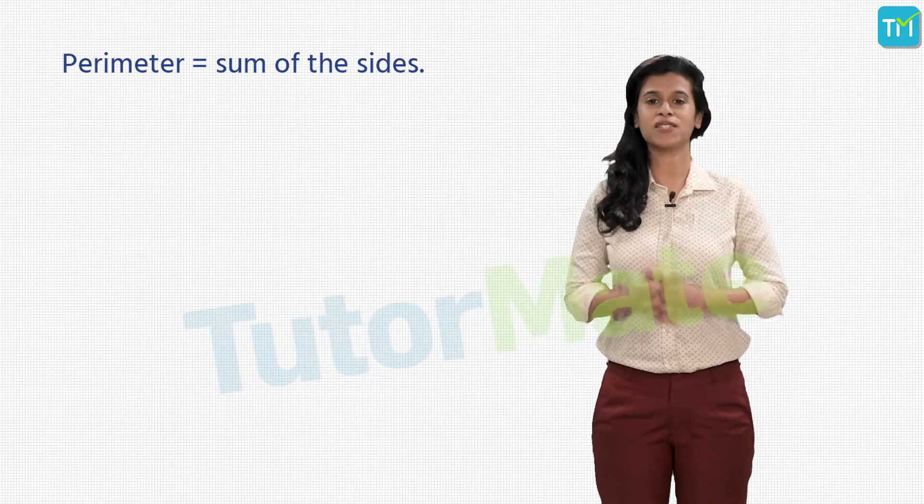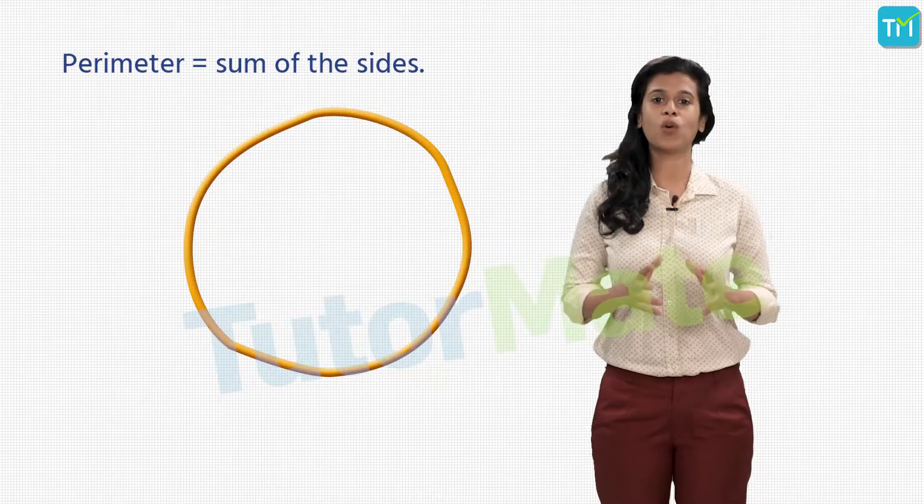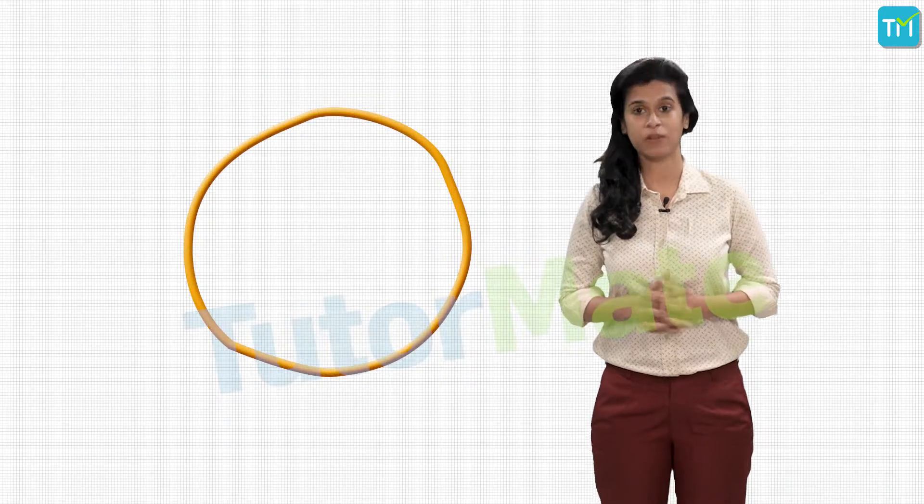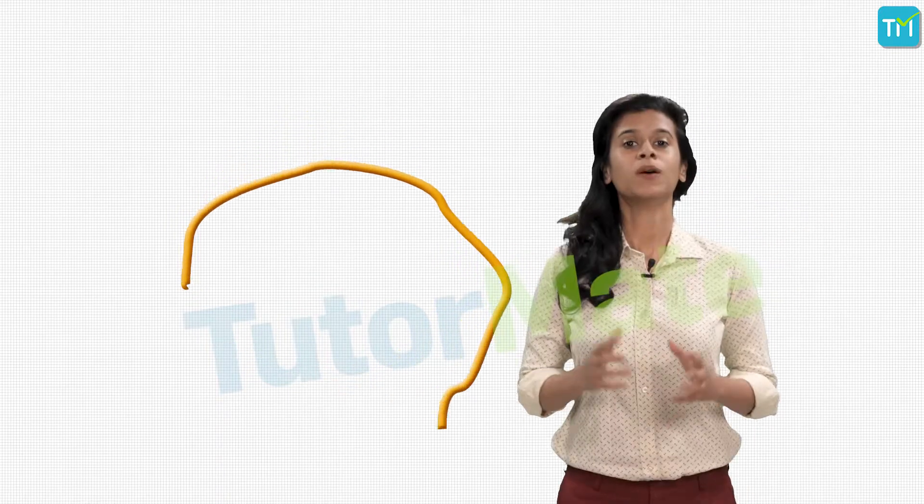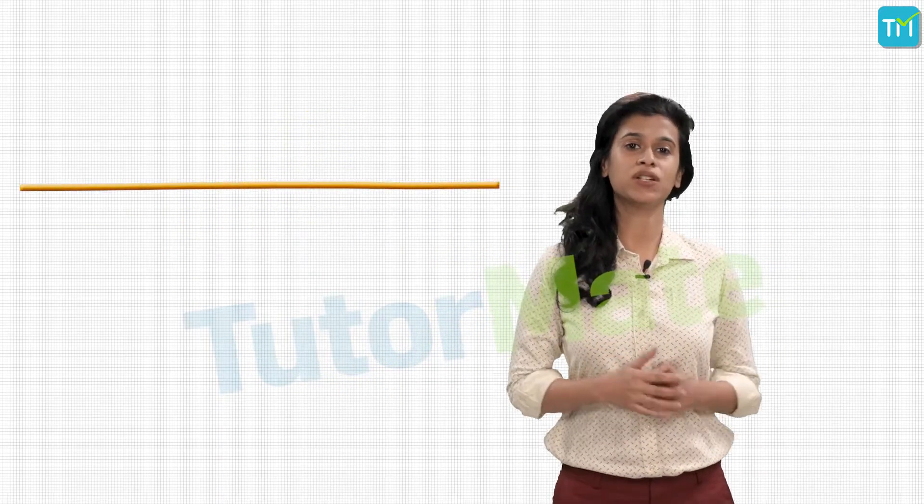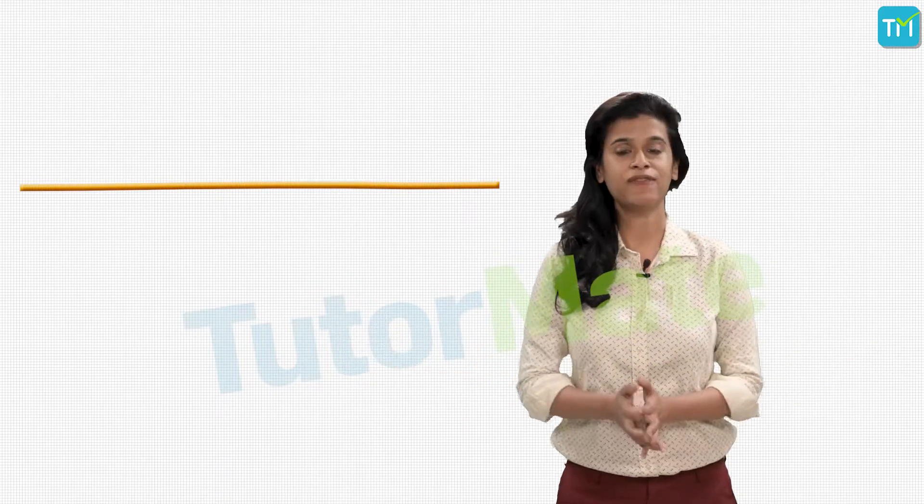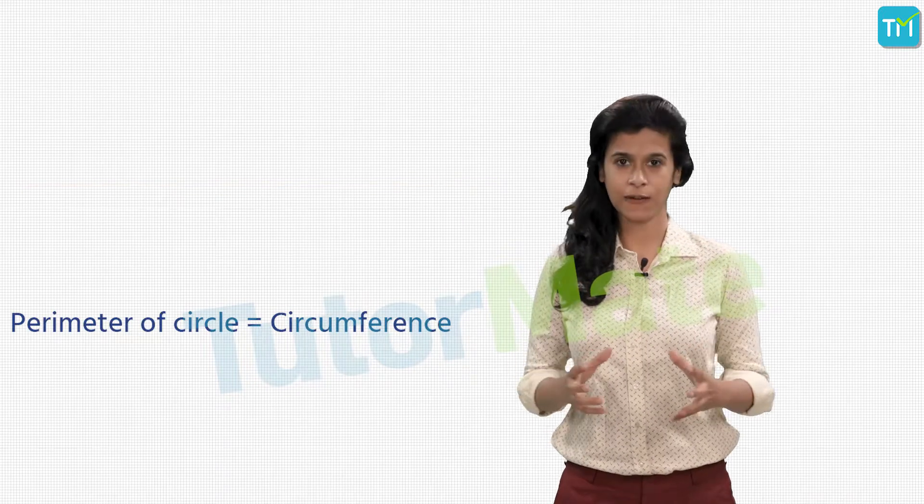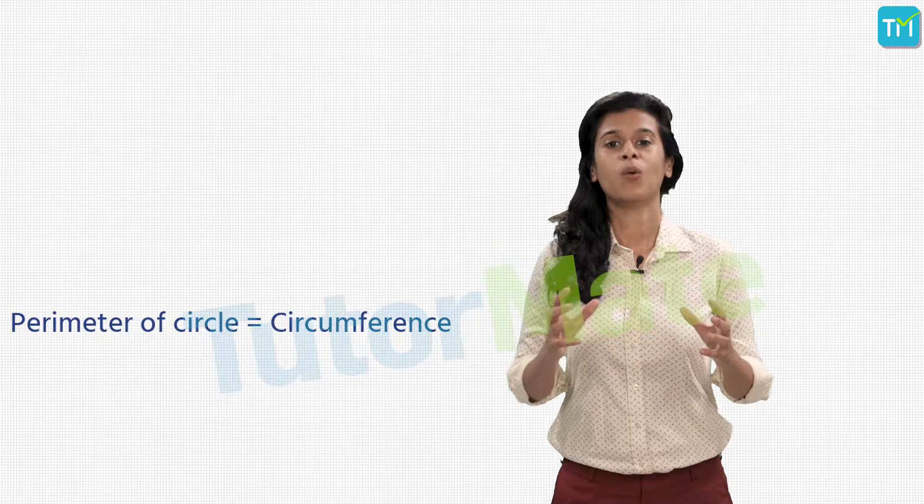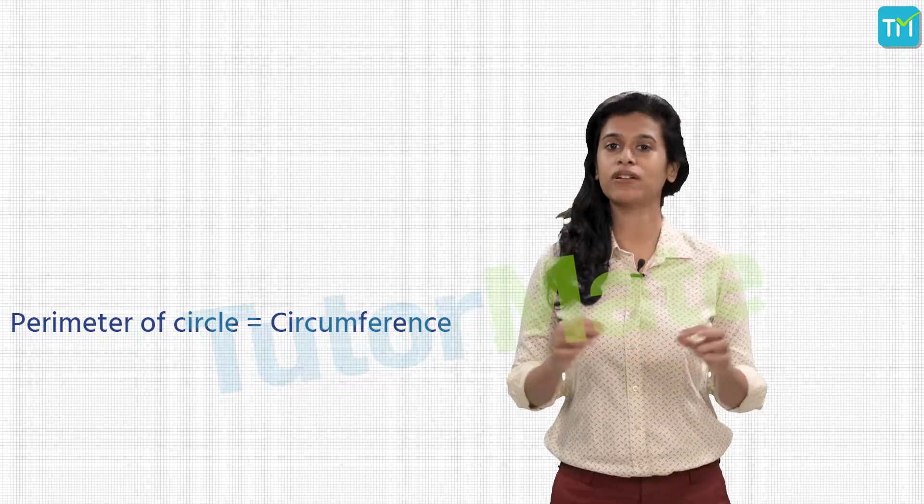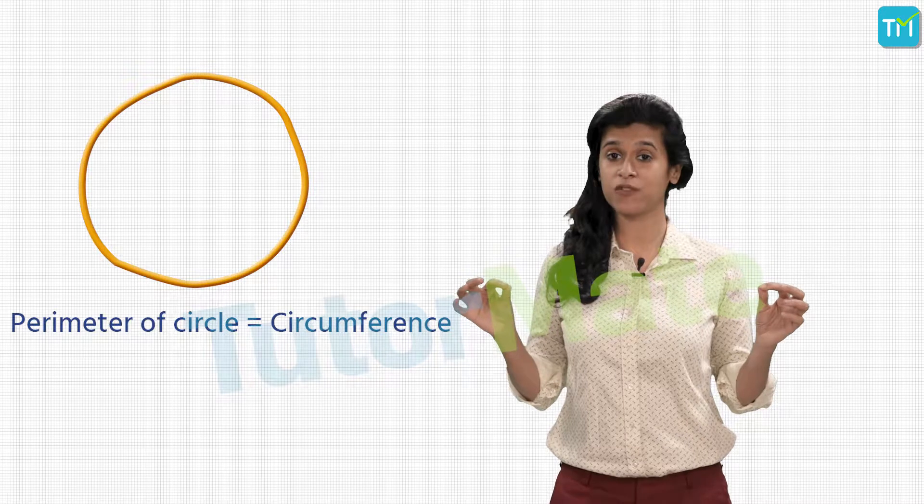What if I have a circular rubber band and I want to calculate its perimeter? Simple. I'll just cut it at one point so it opens up and I get a single line. We can easily measure this using a ruler. The length of this would be the perimeter of the rubber band. In fact, the perimeter of a circle is known as its circumference.